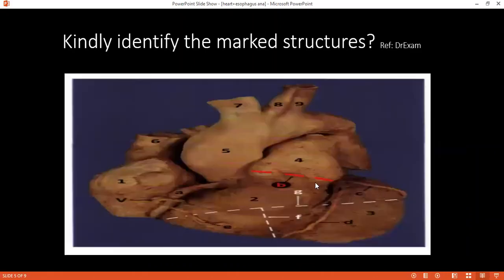Can you please identify all the structures here, starting from one? One is the right atrium. Two is the right ventricle. Three is the left ventricle. Four is the pulmonary trunk. Five is the ascending aorta. Six is the superior vena cava. Seven is the brachiocephalic trunk. Eight is the left subclavian. Nine is the left common carotid.